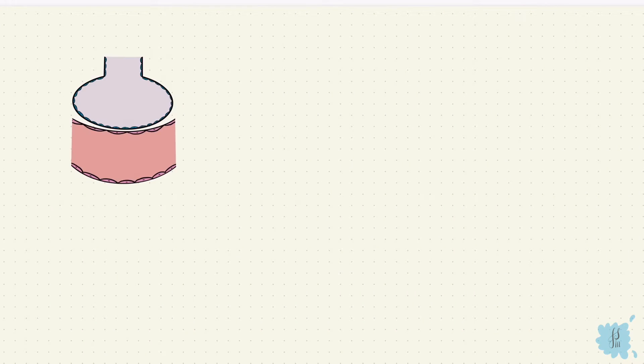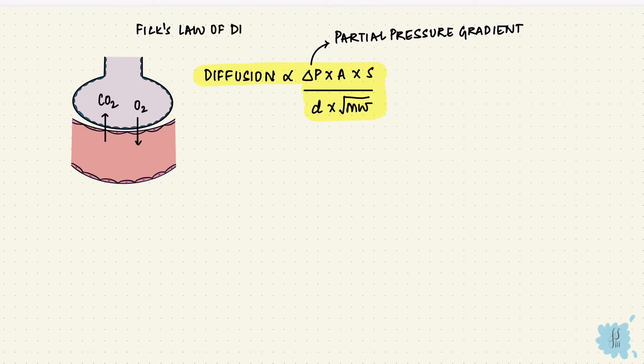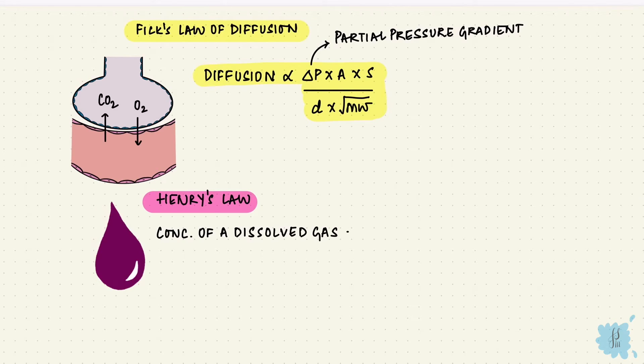Oxygen, carbon dioxide, and all these gases, they move by diffusion. The diffusion of a gas depends upon the change in pressure, the cross-sectional area, the solubility, the distance that the gas has to travel, and the square root of the molecular weight. The change in pressure is the pressure gradient and it's a partial pressure gradient. This is Fick's law of diffusion. Henry's law is for the concentration of a dissolved gas - that's the partial pressure of the gas into the solubility coefficient.